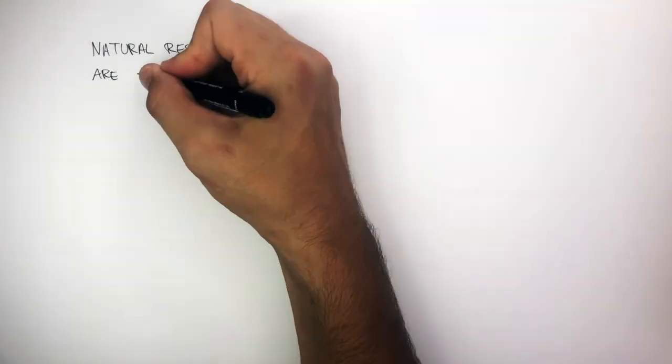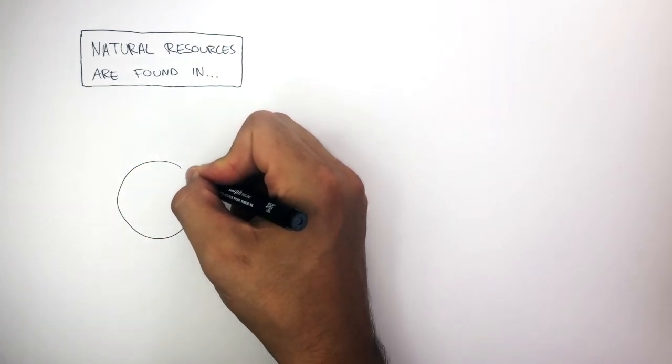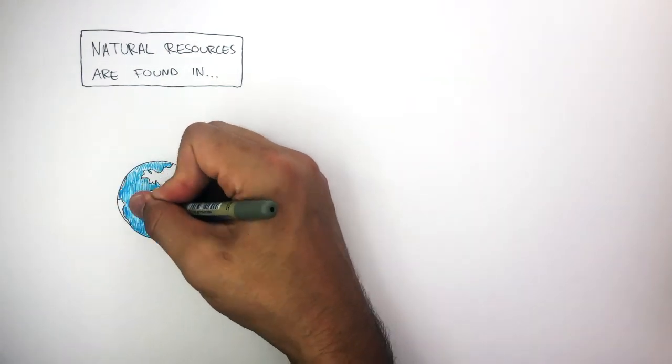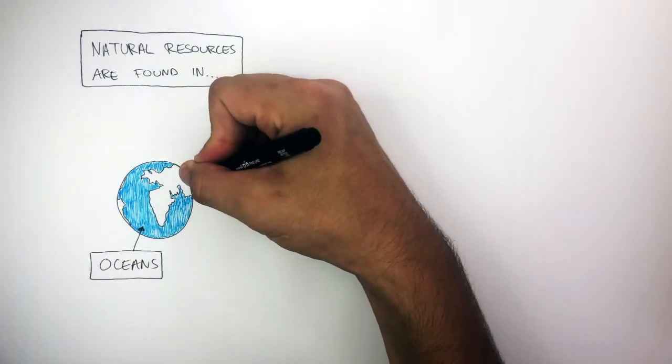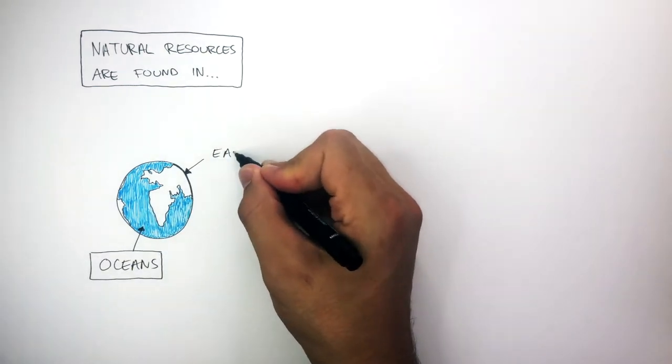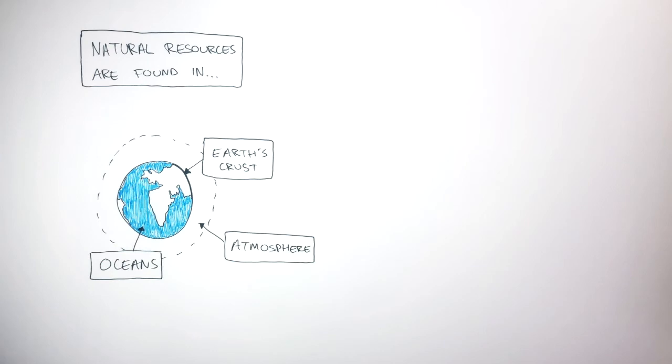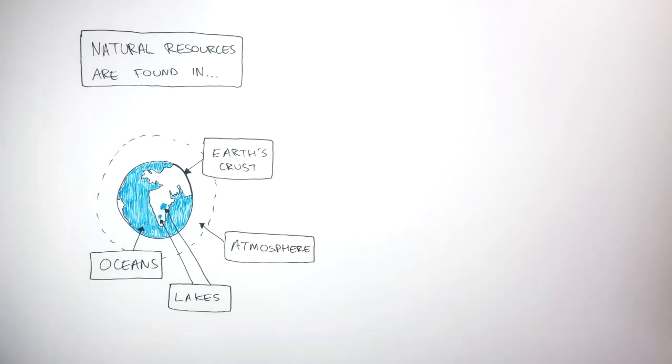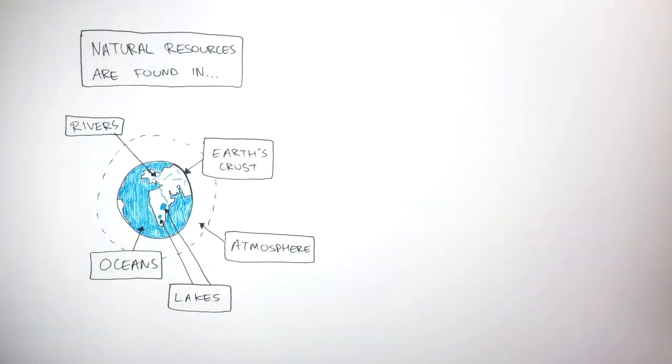Now, natural resources are found in many different places on earth. This diagram represents earth. This represents the different continents we live on, and this represents the oceans of earth. So, natural resources can be found in earth's oceans. Where I'm coloring this bit in black represents earth's crust. This dashed line represents earth's atmosphere, and contains the air we breathe every day. These blue little colored patches represent lakes, where resources can also be found. And finally, these blue lines represent rivers. So, there are many places natural resources can be found on earth.